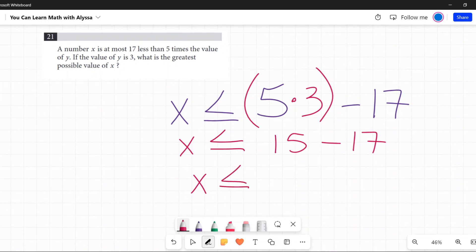15 minus 17 is negative two. So X is less than or equal to negative two. That is the greatest possible value of X, negative two.